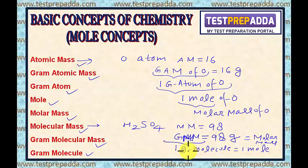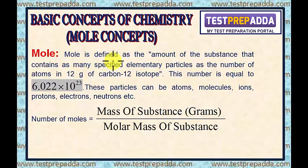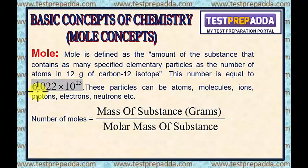In this chapter, I will start my discussion with the term mole, and after that I will talk about mass-mole-number conversions. Mole is defined as the amount of substance that contains as many specified elementary particles as the number of atoms in 12 grams of carbon-12 isotope. In short, mole is just a number, and the value is 6.022 × 10²³.